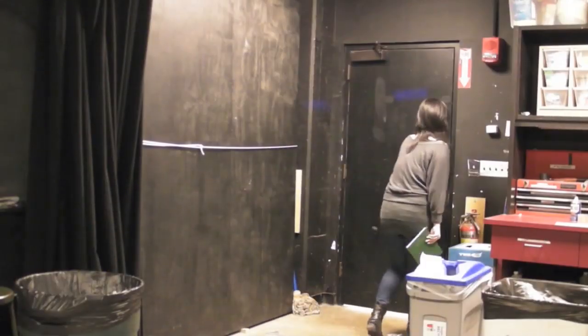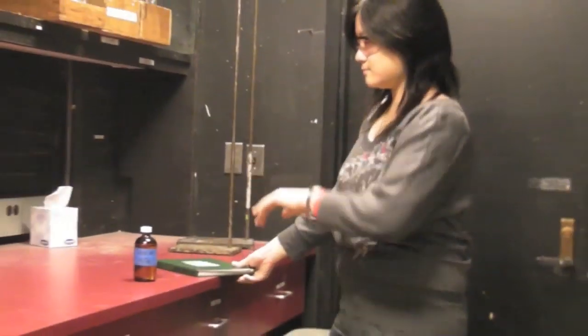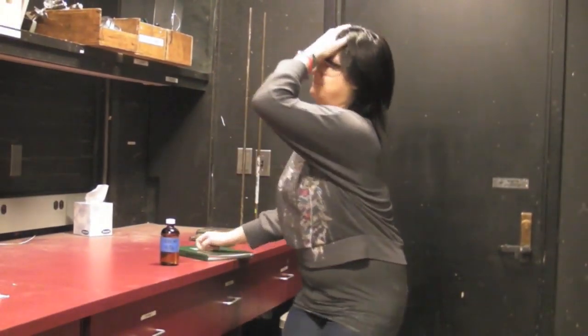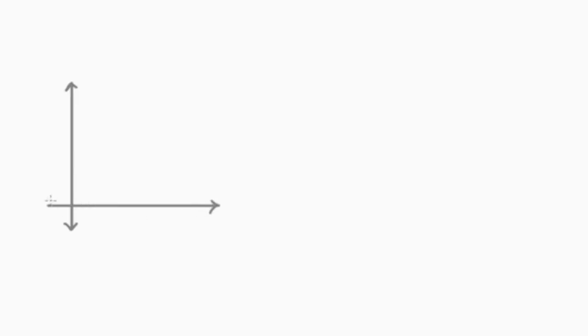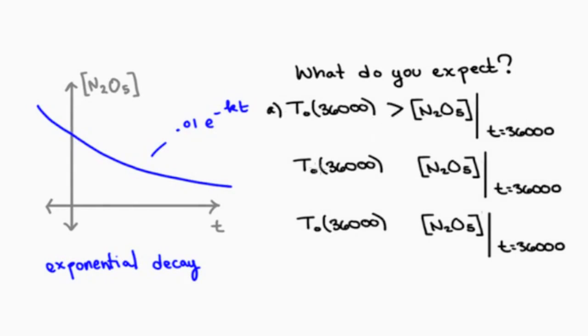But now it's Tuesday. You leave the N2O5 on the counter for a full 10 hours. Curses! We know that the exact solution is an exponential decay. So do you think that the linear approximation will be an overestimate, an underestimate, or equal to the exact solution after 10 hours?